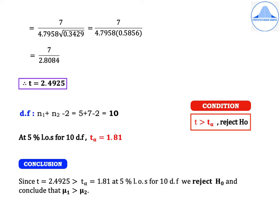The degrees of freedom is N1 + N2 − 2 = 5 + 7 − 2 = 10. The condition for a right-tail test is: reject H0 if T > T-alpha. At 5% level of significance for 10 degrees of freedom, T-alpha = 1.81. Since T = 2.4925 is greater than T-alpha = 1.81, at 5% level of significance for 10 degrees of freedom, we reject H0 and conclude that mu1 is greater than mu2.